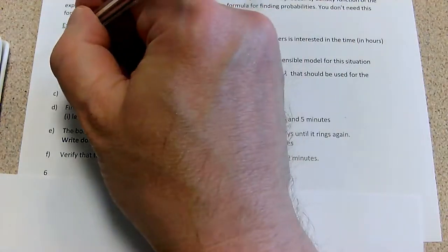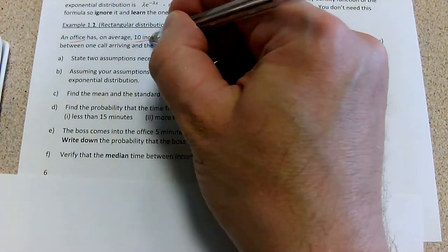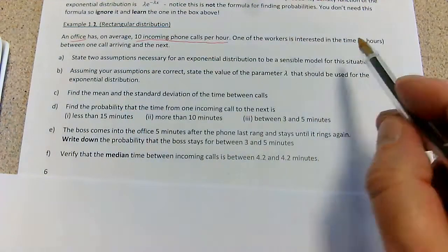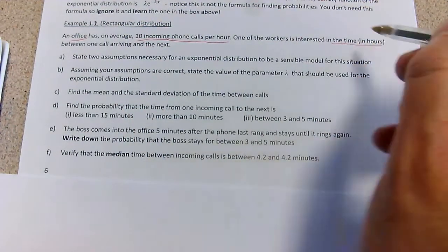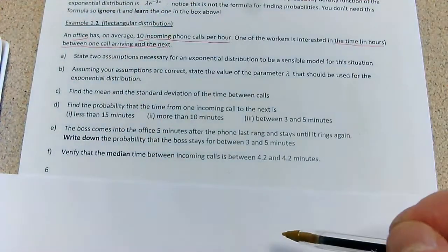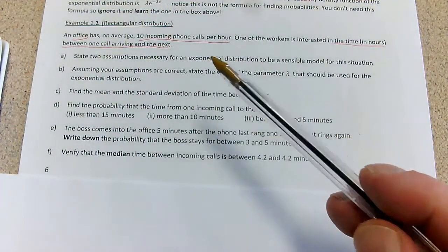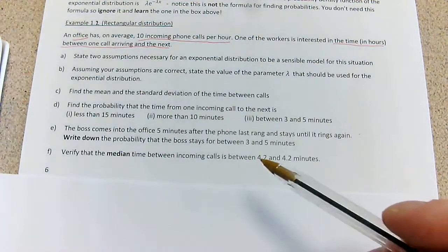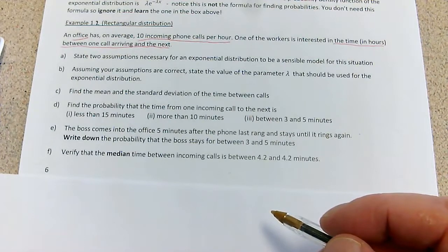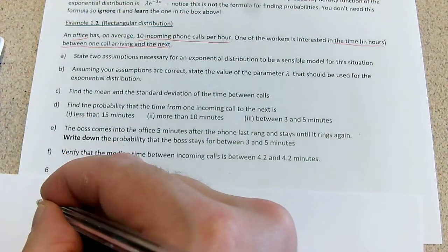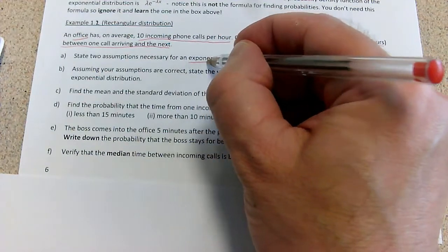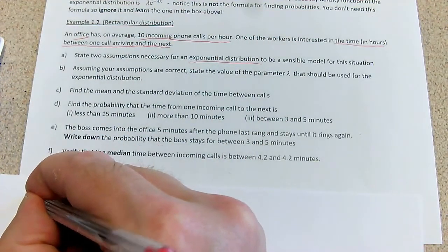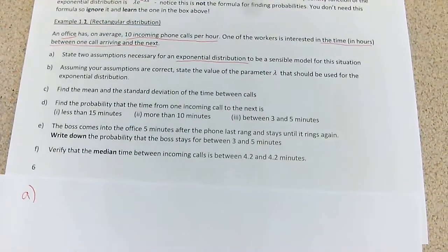We've got a question about an office where there are 10 incoming phone calls per hour on average, and we're interested in the time between one call arriving and the next. We are waiting before the first occurrence of something occurring, so we do need to set up an exponential distribution, because part A tells us we're going to do that — but in part A, we've got to actually use our knowledge of when the exponential distribution applies.